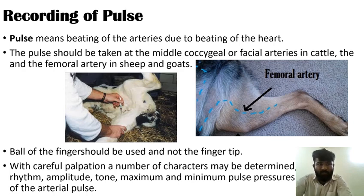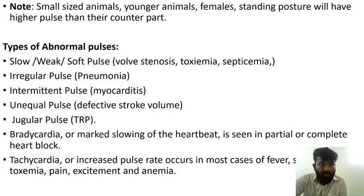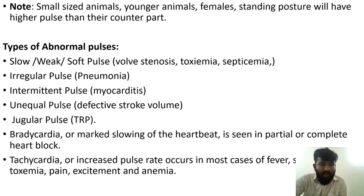Note: small-sized animals, younger animals, and females in a standing posture will have a higher pulse than their counterparts. Types of abnormal pulses include: slow, weak or soft pulse; irregular pulse; intermittent pulse; unequal pulse; and jugular pulse.